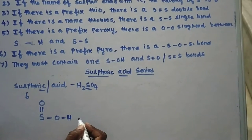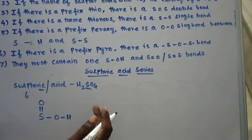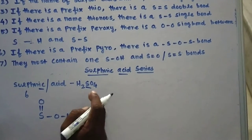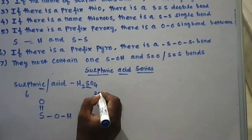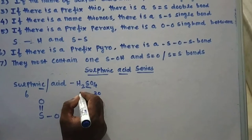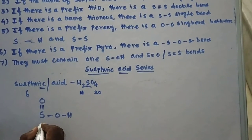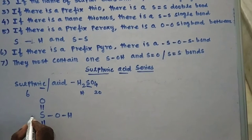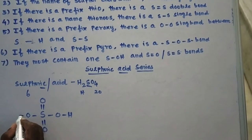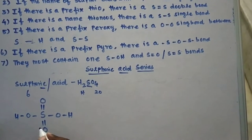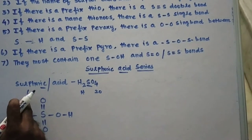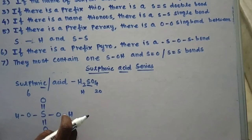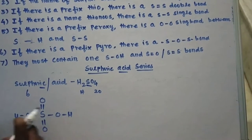The valency is 6. There are two oxygen atoms used so far, with two remaining. With one hydrogen remaining, there is another S=O bond and another OH bond. So for sulfuric acid, with valency 6, there are two S=O bonds — one on the right-hand side and one on the left-hand side — and two OH groups.